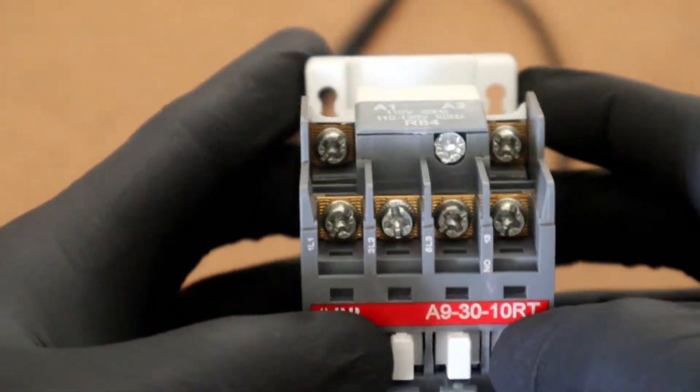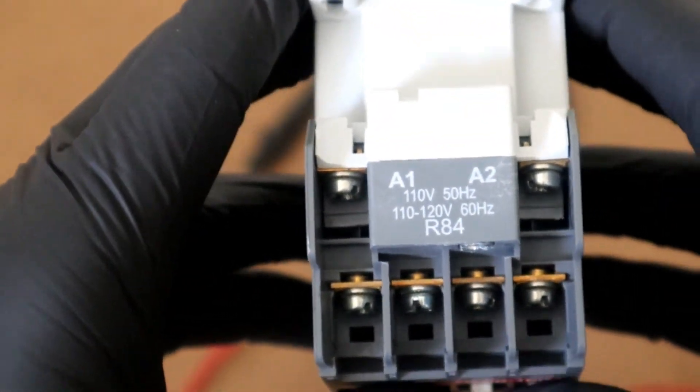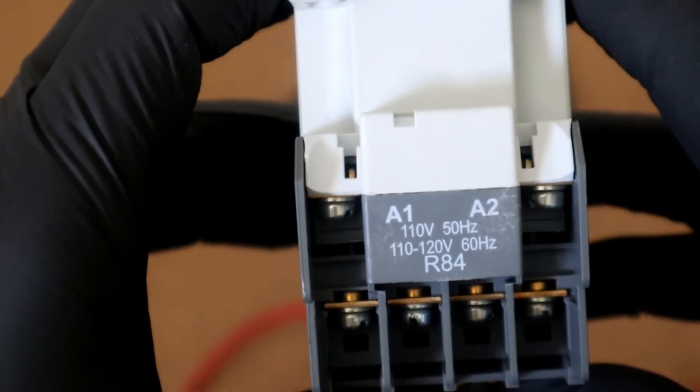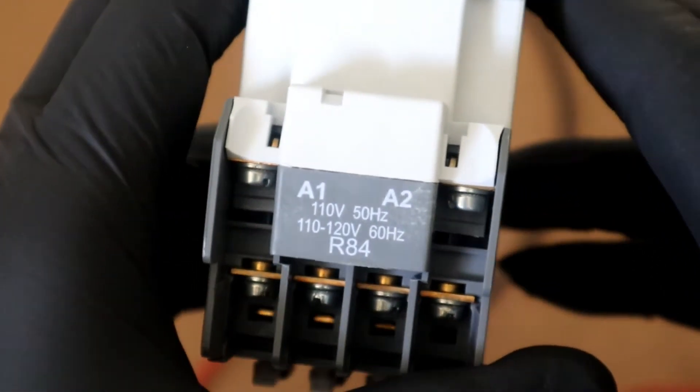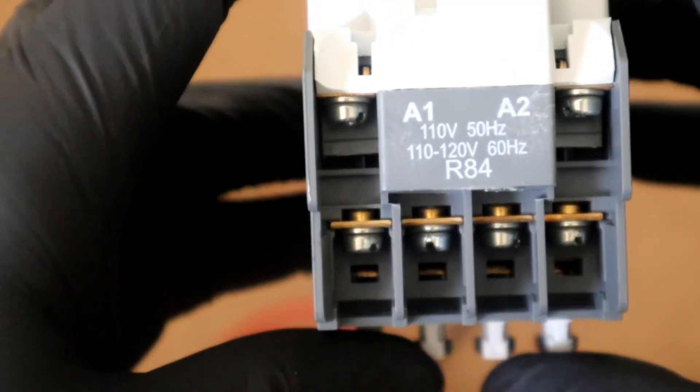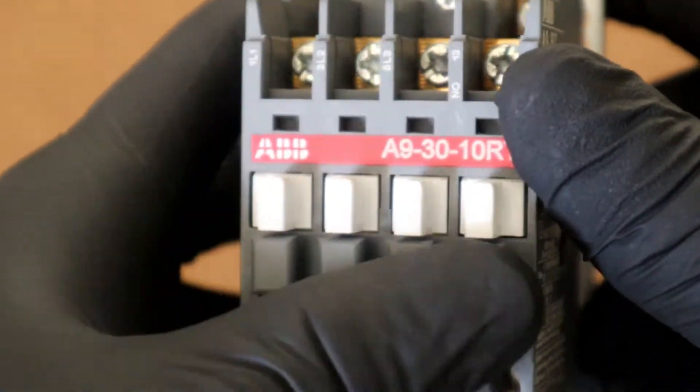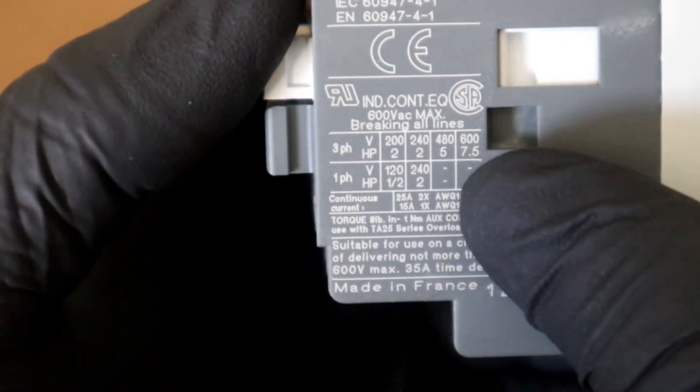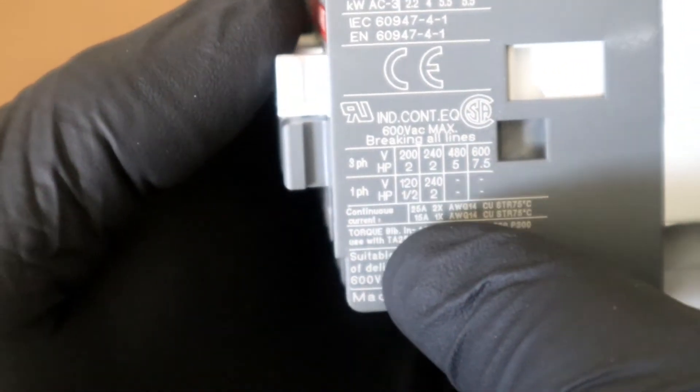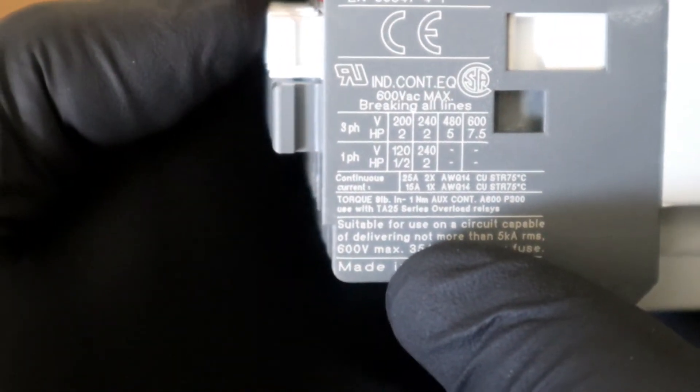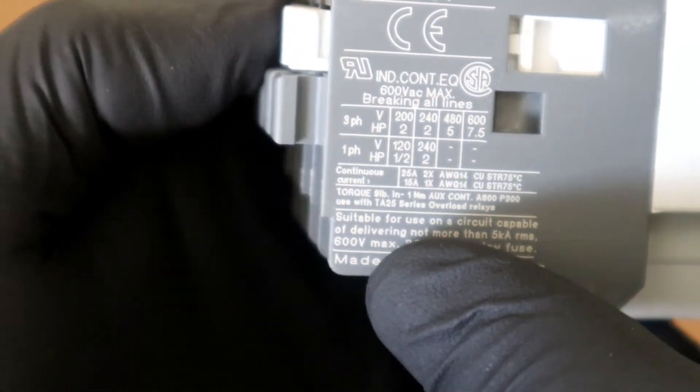Another point to note, when using a contactor, it's always good to check your manufacturer specifications or if it's a replacement part, check the specification in the contactor that is being replaced. So that the coil voltage levels match up as well as the high current parts, ensure that the voltage specifications are intact. You can see this contactor can switch three phase or single phase with different voltage levels for the three phase ranging from 200 to 600 volts, and for the single phase 120 volts.